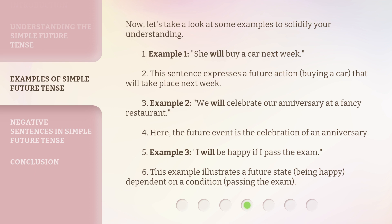Now let's take a look at some examples to solidify your understanding. Example 1: 'She will buy a car next week.' This sentence expresses a future action — buying a car — that will take place next week. Example 2: 'We will celebrate our anniversary at a fancy restaurant.' Here, the future event is the celebration of an anniversary. Example 3: 'I will be happy if I pass the exam.' This example illustrates a future state — being happy — dependent on a condition: passing the exam.